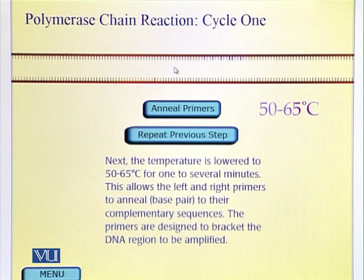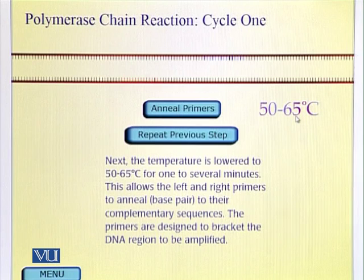When that happens, it allows the two DNA strands to separate and reveal the information, which is basically the sequence of nucleotides. In the next stage, the temperature of the sample is lowered to 50 to 65 degrees Celsius.